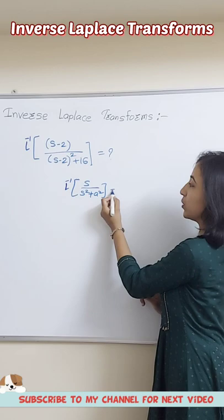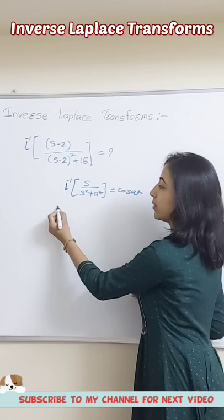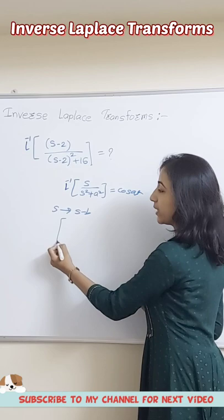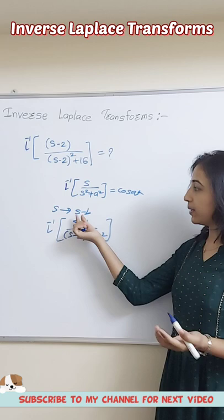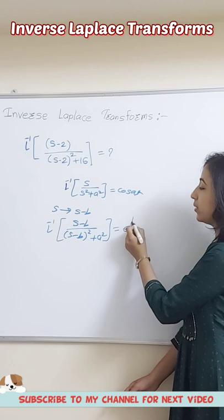Whenever we replace S by S minus B, we get the left-hand side as S minus B divided by S minus B bracket squared plus A squared. So if we replace S by S minus B, at that time the function of T becomes e to the power Bt.